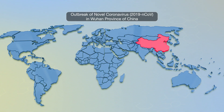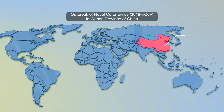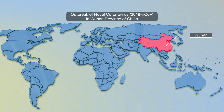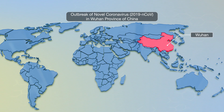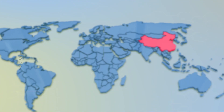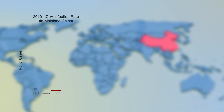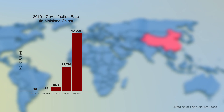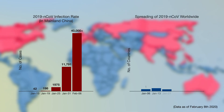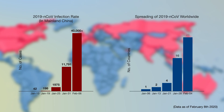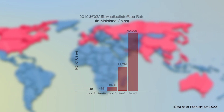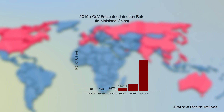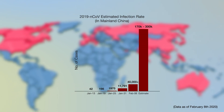An outbreak of coronavirus infections in the Wuhan province of China in December 2019 is threatening to emerge as the next pandemic. At current count, over 40,000 cases and 600 deaths have been reported in China and over 300 cases in 25 other countries. Unofficial modeling studies by a number of institutions claim infections of over 150,000.